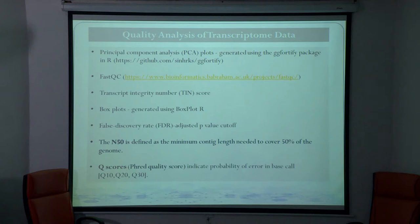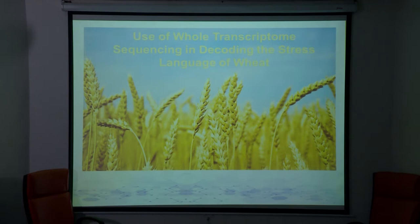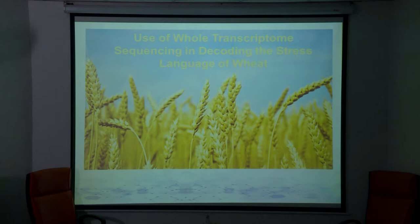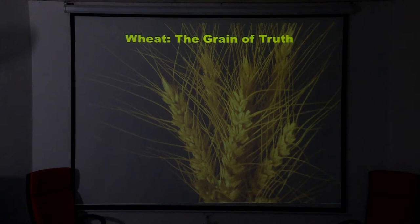That was a brief about transcriptome. Now let me take you to the use of transcriptome. My crop is wheat and we have used transcriptome extensively for solving the problem of heat stress in wheat. Some quotes here: climate change makes food crops less nutritious. Nature published a paper claiming CO2 is increasing day by day and because of this we are depleting beneficial nutrients from grains — and the biggest sufferer is wheat. The biggest problem with wheat is it is highly heat-sensitive; even a fluctuation of 1 or 2 degrees Celsius in temperature during grain filling has devastating effects on starch quality.